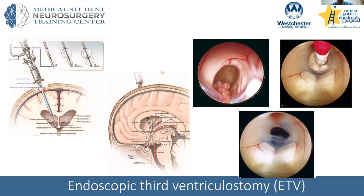This procedure — endoscopic third ventriculostomy — involves a burr hole, opening the bone, and passing an endoscope, which is a camera with a light at the end, into the ventricle. Going through the lateral ventricle, through the foramen of Monroe, into the third ventricle — as shown in these pictures. We then pass a balloon-tipped catheter, similar to a Foley, and expand it through the floor of the third ventricle to create a new channel for CSF to drain. In my opinion it's a beautiful surgery — you can see all the anatomy: the fornix, large veins along the septum and thalamus, the mammillary bodies, and below the arachnoid the basilar artery and posterior cerebral arteries. It's very high-stakes territory.